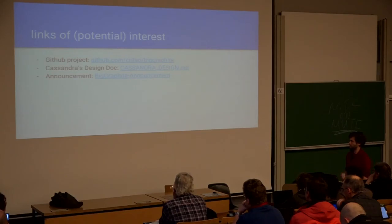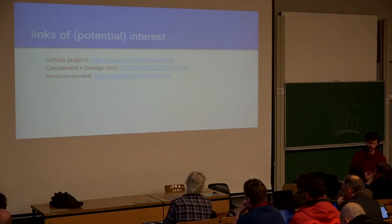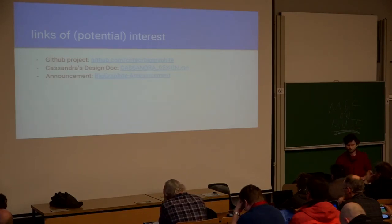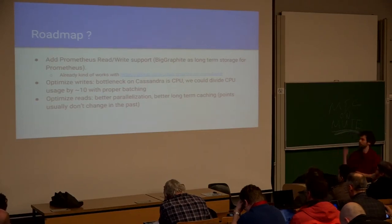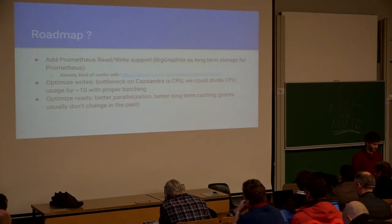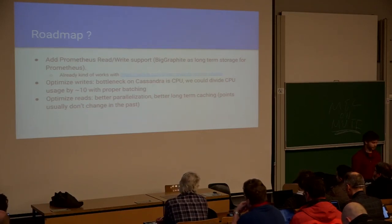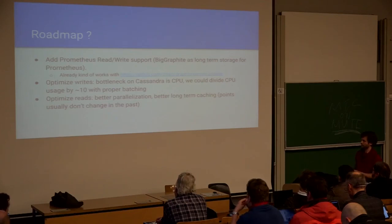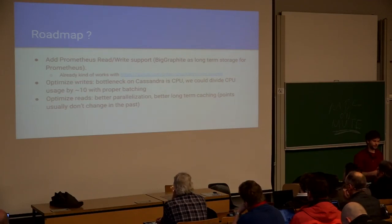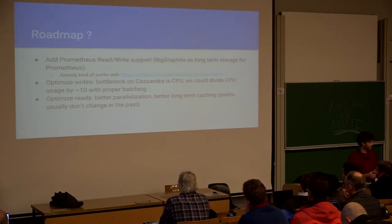There are links you can visit for more information. The most interesting is the design doc written at the beginning of the project, which explains how it works and why we made the decisions we did. What we still need to do: we use Prometheus too, and we want users using Prometheus to be able to find their metrics in Graphite — we've built a Graphite-Prometheus adapter for that. We also need to optimize writes: adding a larger write buffer would increase the delay between point injection and when the user can read it to about 3 minutes, but it would significantly reduce write load.